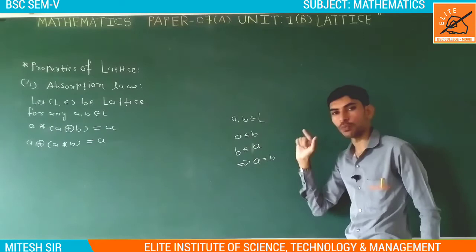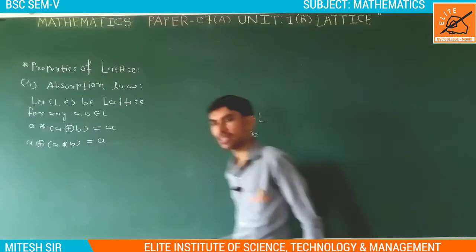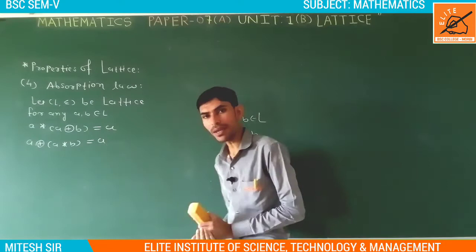So here we have to prove A star (A ring sum B) is equal to A, and A ring sum (A star B) is equal to A, using these results. We will see the proof of each one by one.